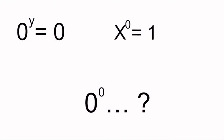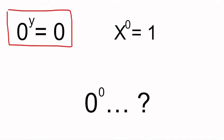One more index law: 0 to the power of any number — we'll call it y — is equal to 0. So 0 to the power of 6, or 0 to the power of 4, it doesn't make a difference, because it's just 0 times 0 and that's always going to be 0 no matter how many times we do it.